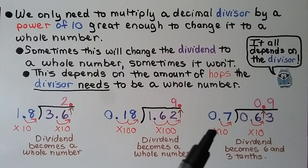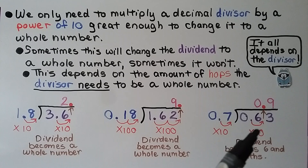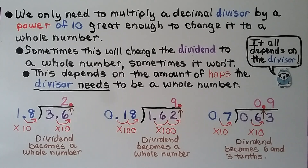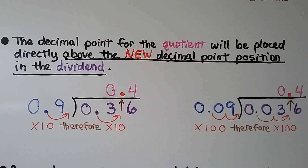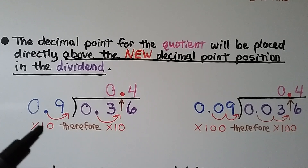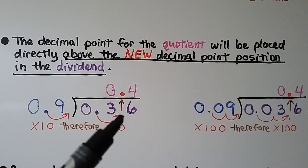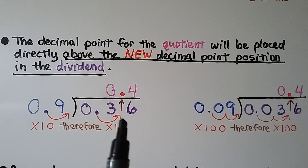Here we have 7 tenths as divisor and we're trying to fit it into 63 hundredths. We only need to move it one hop to the right, so that's times 10. We multiply the dividend times 10, but it doesn't become a whole number — it becomes 6 and 3 tenths. The new decimal point position is in between the 6 and the 3, and for the quotient, it goes straight above that position. The decimal point for the quotient will be placed directly above the new decimal point position in the dividend.